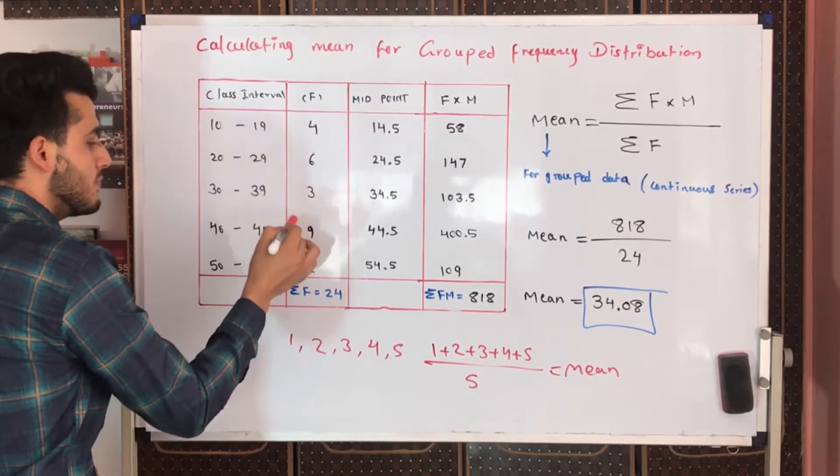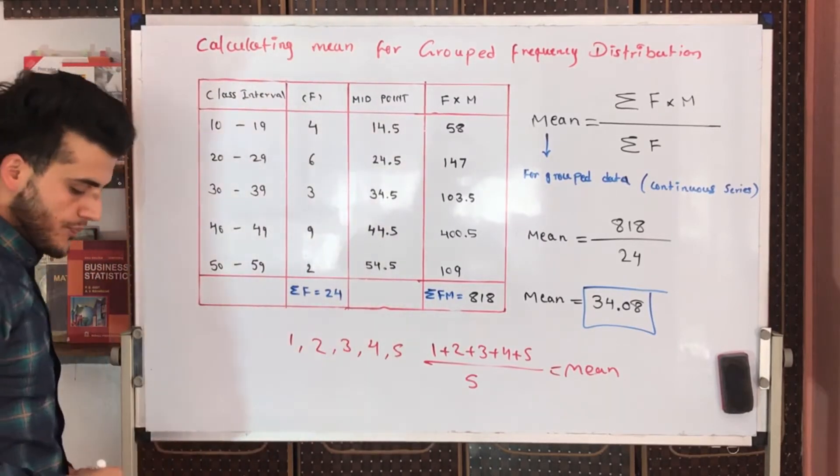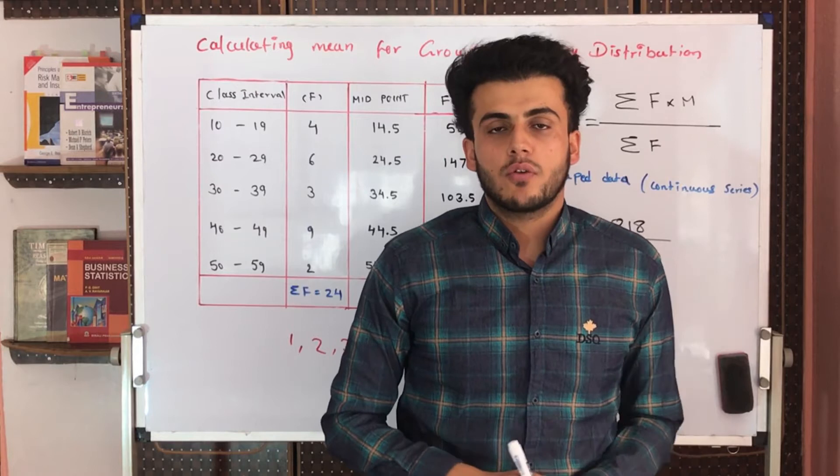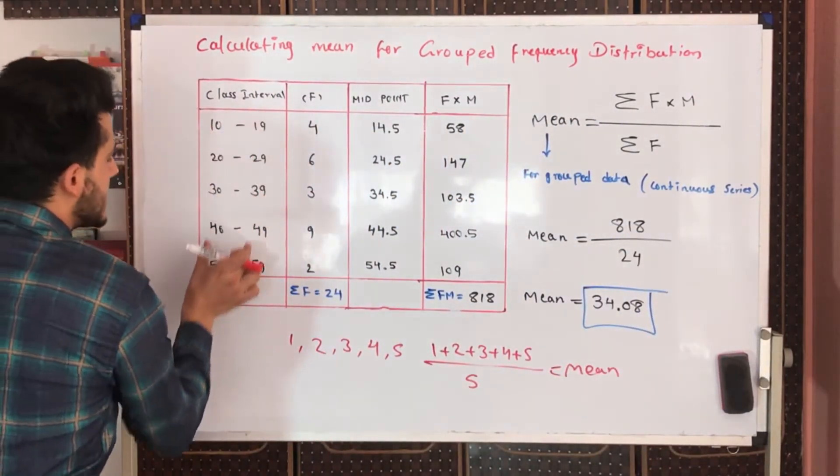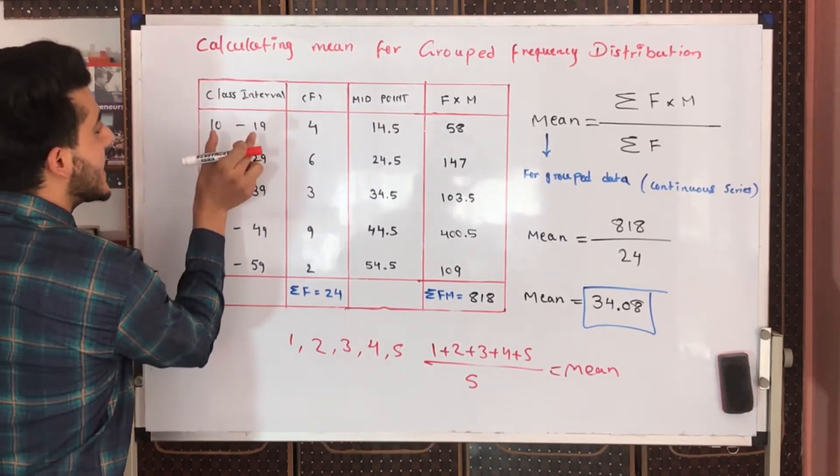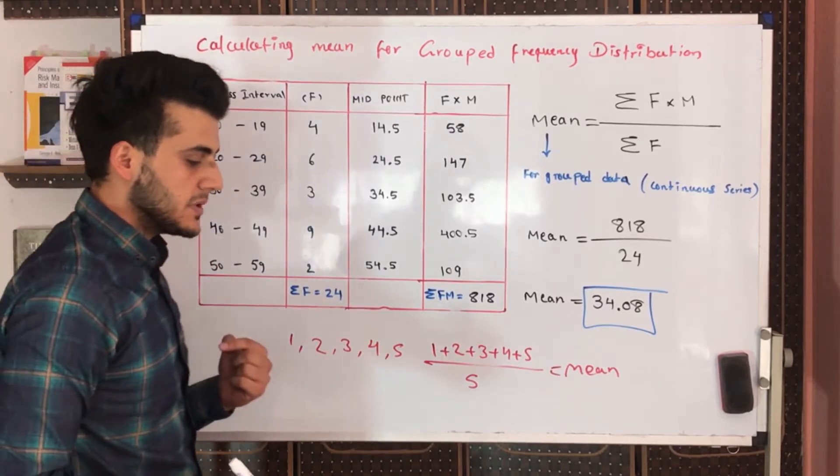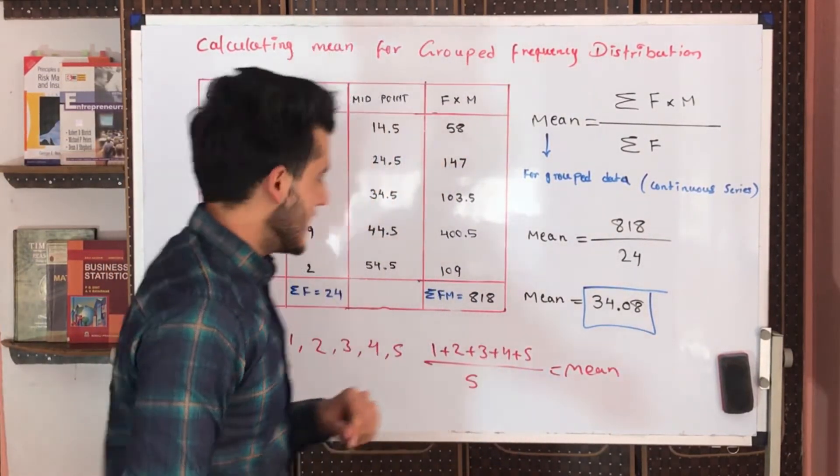Now in here we need midpoint. Why do we need it? Because all of these intervals are given, but we are not getting exact numbers from these intervals. For this reason, for this purpose, we will go for midpoint.